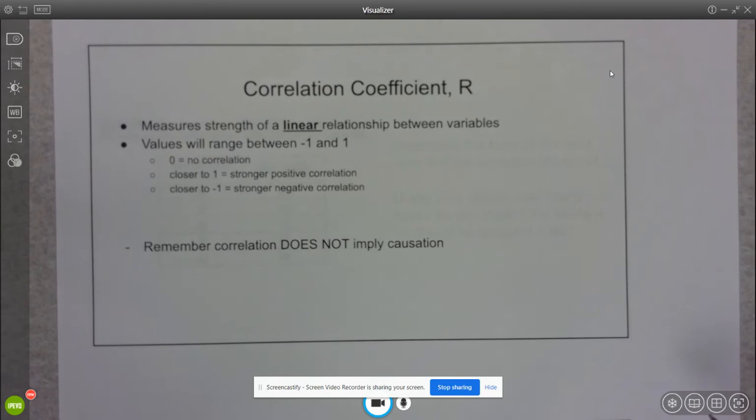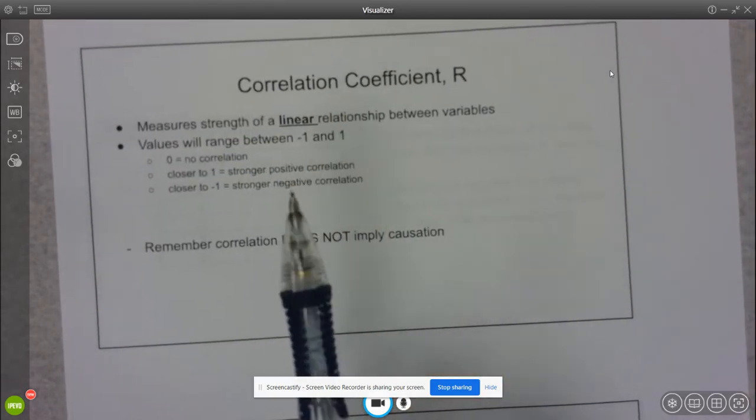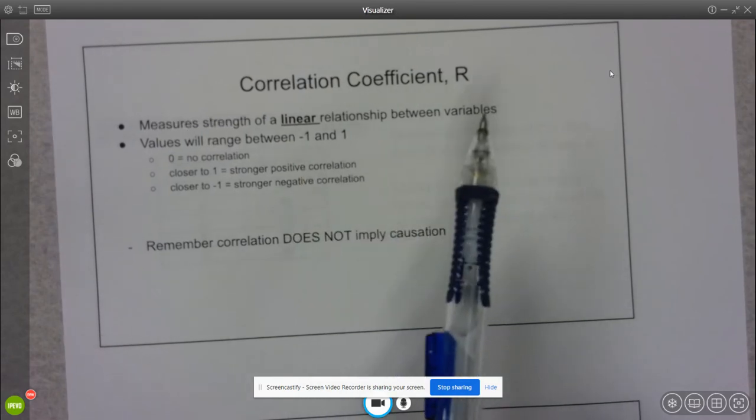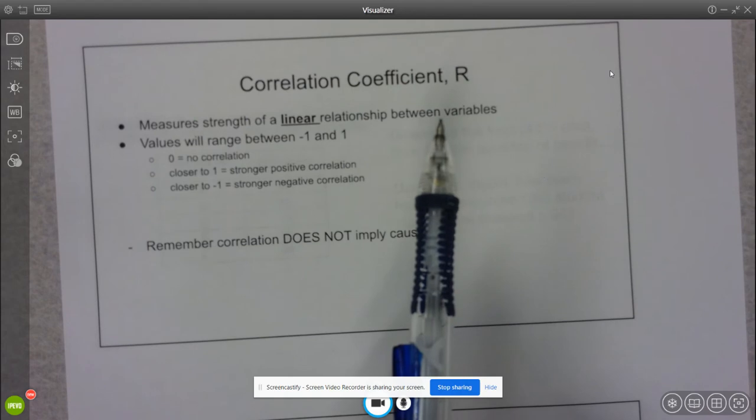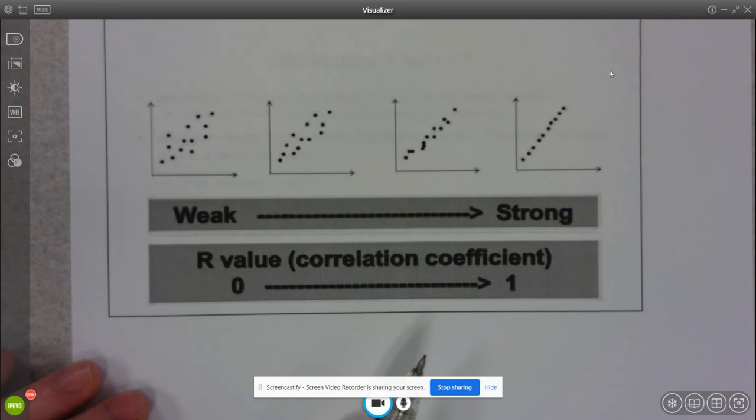So talking about our correlation coefficient, we talked a little bit about these numbers yesterday. We could have a number that was between 0 and 1. The closer it is to 1, the stronger the correlation. The closer it is to 0, the weaker the correlation. And if it's 0, then there is no correlation. So if we're looking at a linear relationship, I'm looking at the correlation coefficient of r.